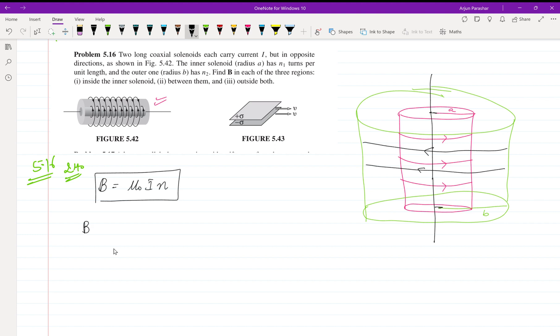This is the magnetic field inside the solenoid. Outside of the solenoid, the magnetic field is zero because no current is enclosed outside the solenoid.